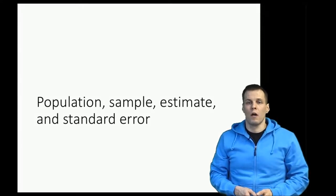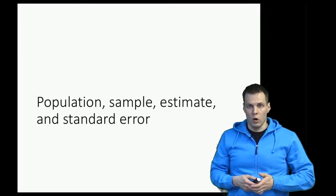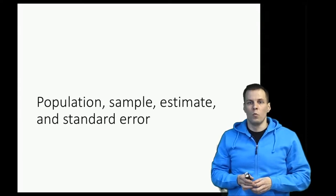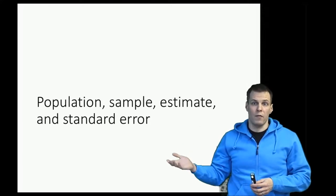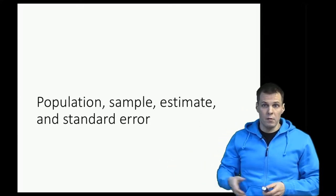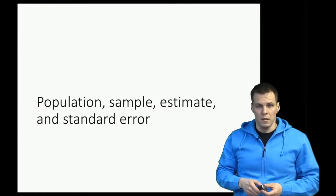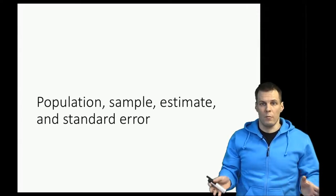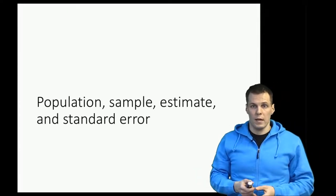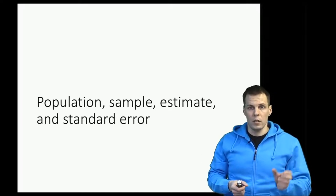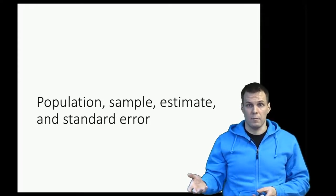It's very common that in research we're interested in a large number of people or organizations. For example, in political polling it's usually interesting to know the popularity of a political party. However, at a national level, measuring everybody's opinion would involve calling millions of people, which is in most cases impractical. Instead, we take a smaller number of people called a sample — for example, 300 or 1,000 people — and use that sample to calculate an estimate of the population popularity of a political party.